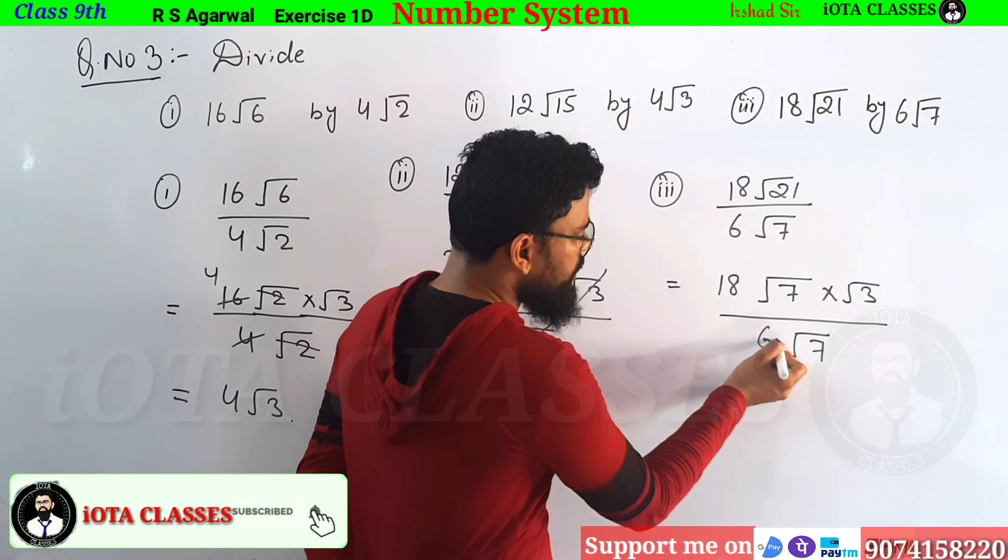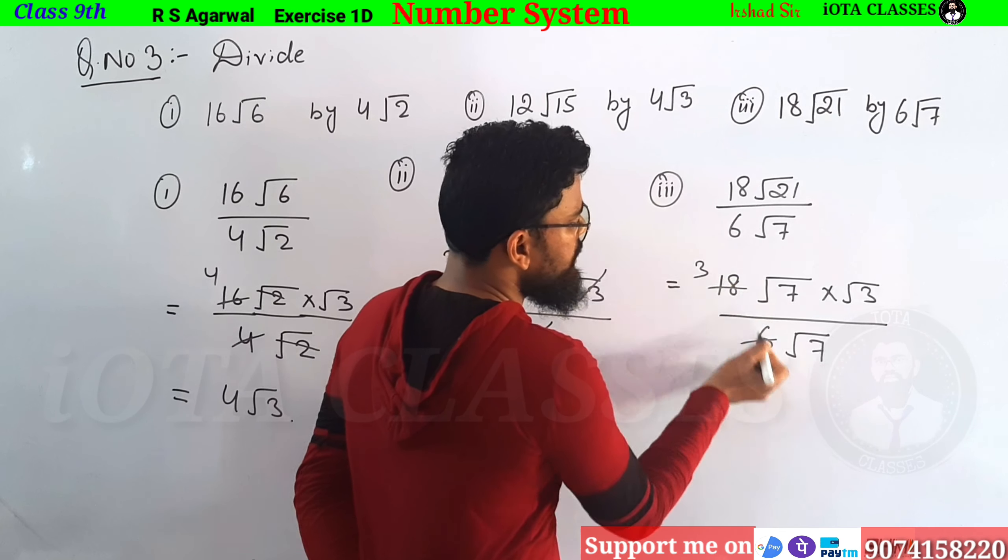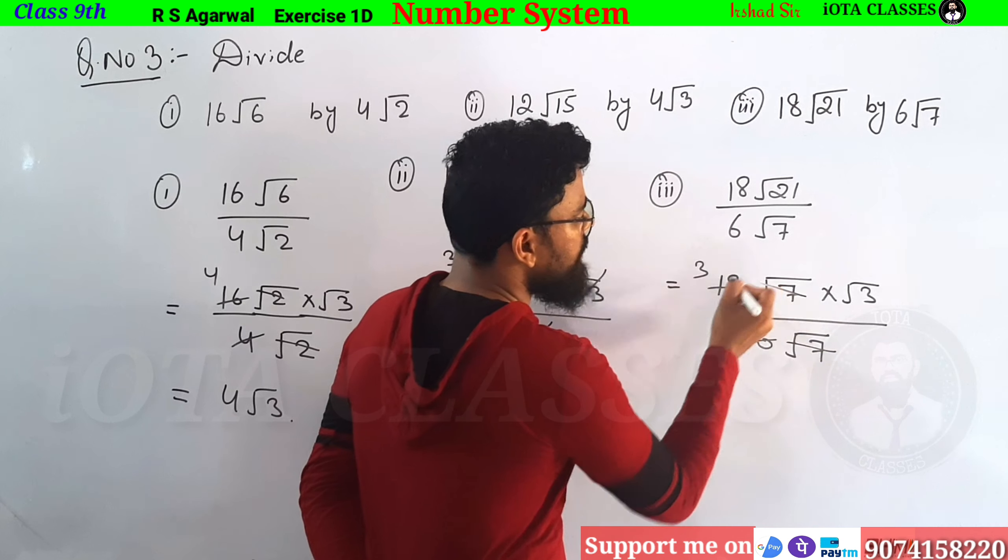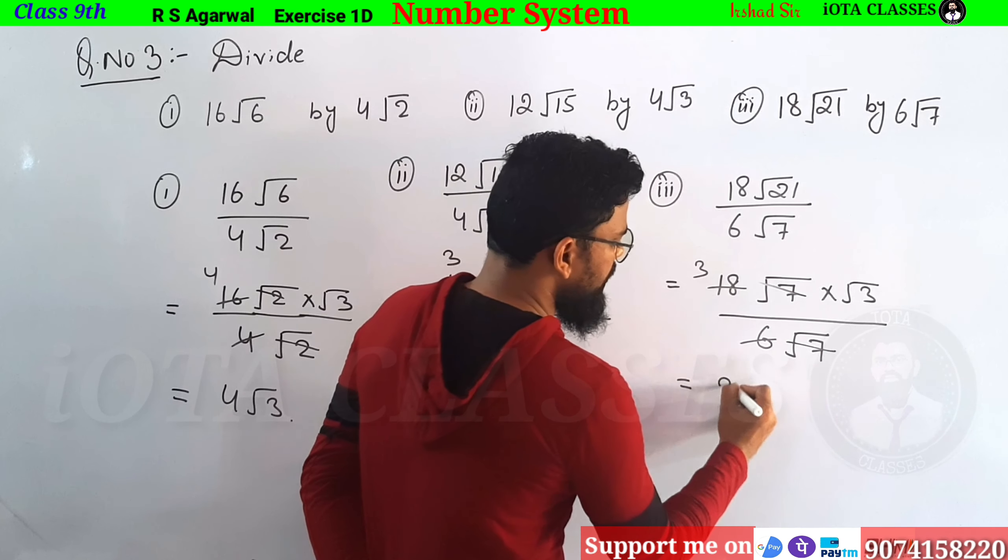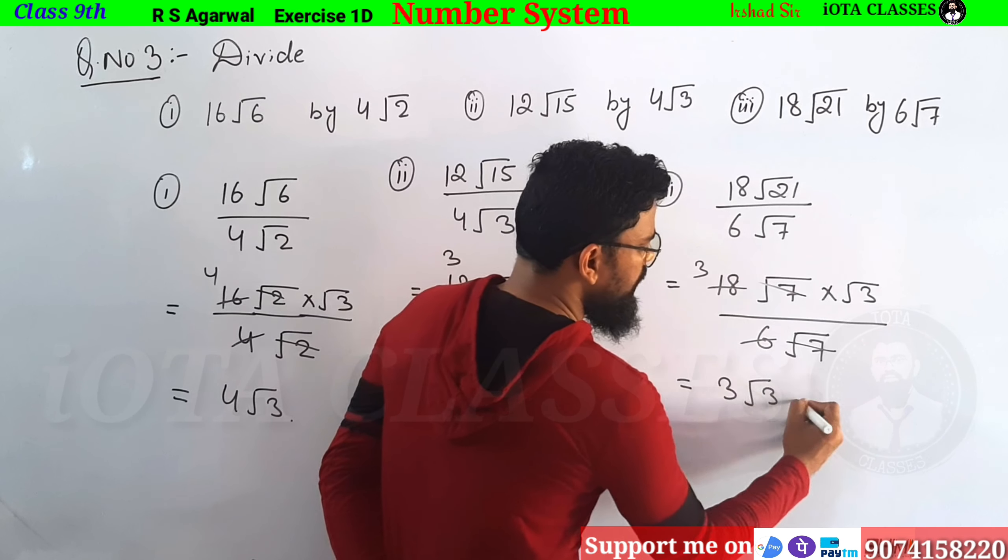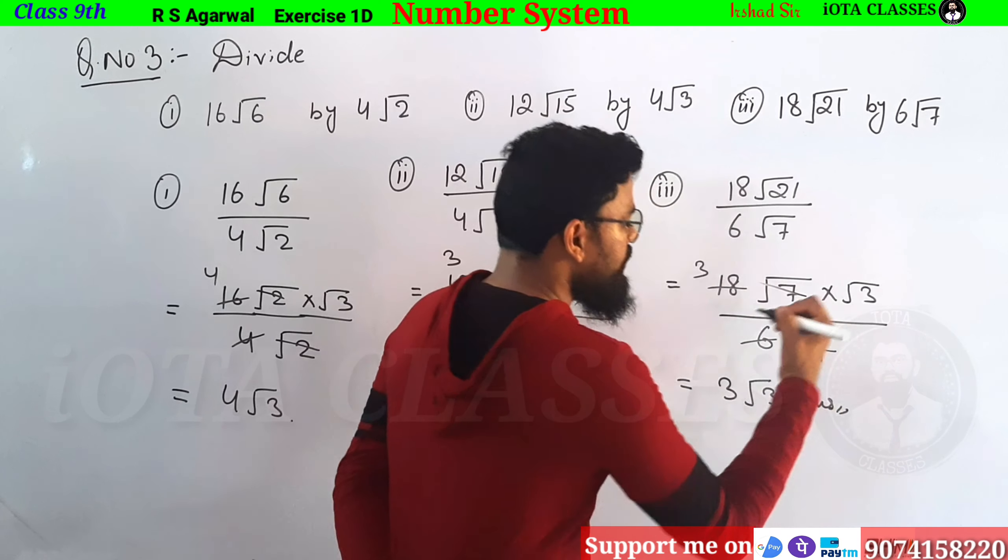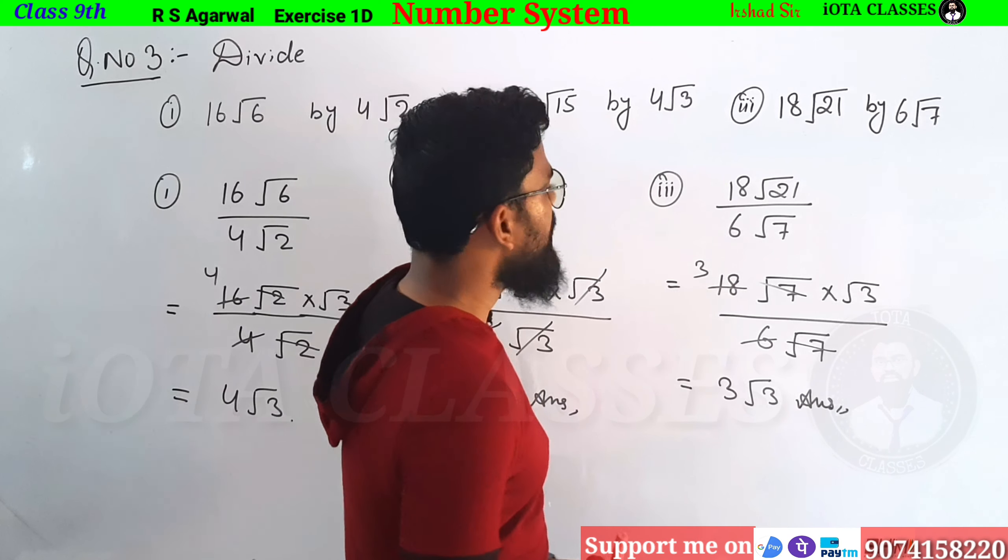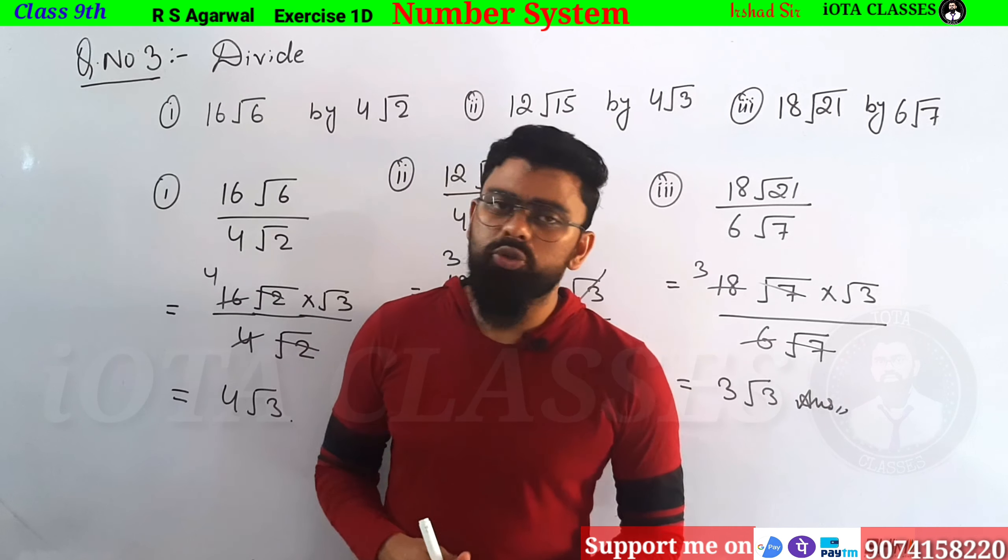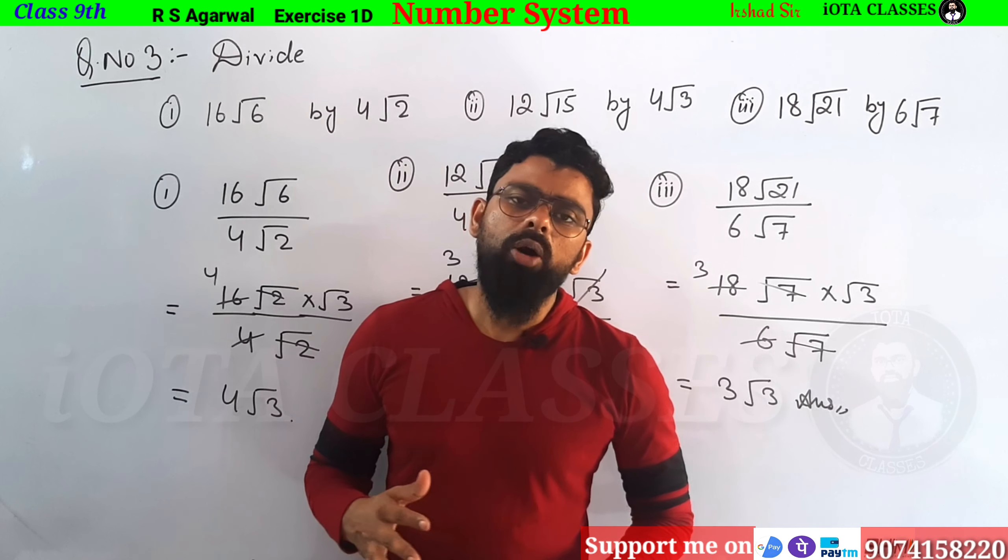Now we will cancel root 7 with root 7. 18 divided by 6 is 3. Finally the answer is 3 root 3. This is the third answer. So this is the way you can solve any questions on divide.